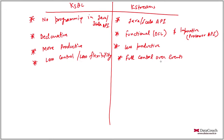For example, stock prices less than a certain value — only then trigger a purchase of new stocks. You can configure and write down such logic through KStreams. Apart from that, KSQL requires a separate cluster.